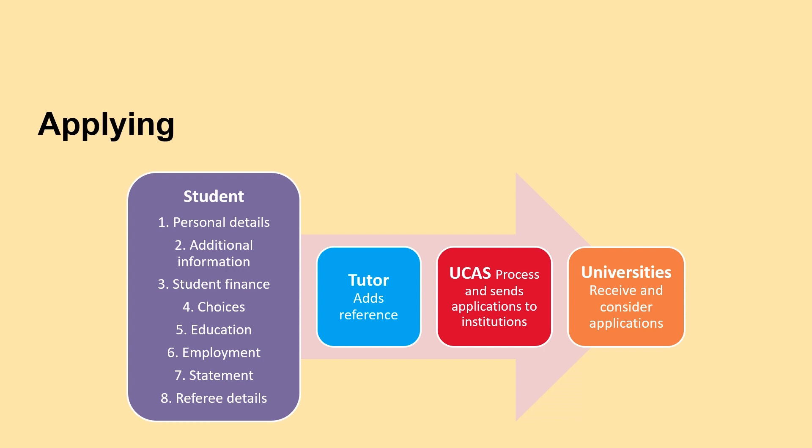You need to fill in your personal details such as your name and address, additional information such as any extra needs you might have, information about student finance, your choices of university and course, and your education history. These are all your qualifications that you've ever taken — even if you're not happy with the grades you received, it is important that you put everything in. You also need to include your paid employment history and a supporting statement for your application.